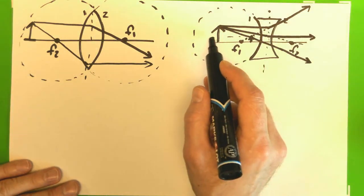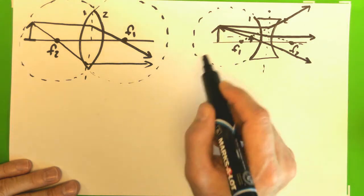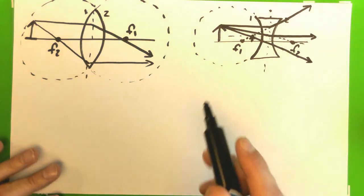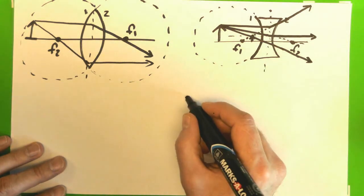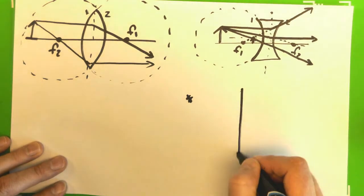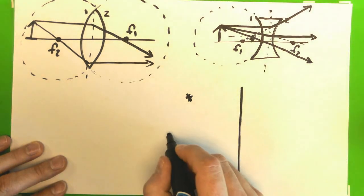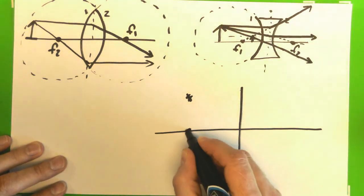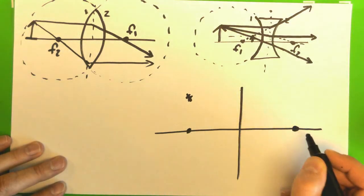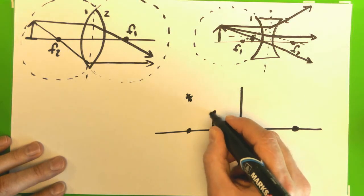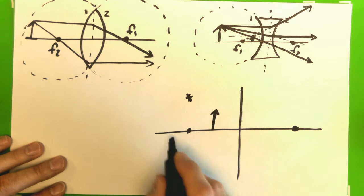And here is the case where the object is outside the focal points. Well, now that we have that clarified of what the focal points are associated with, let's try the other one where we have a diverging lens. I'll go ahead and just draw a straight line indicating the midpoint plane.